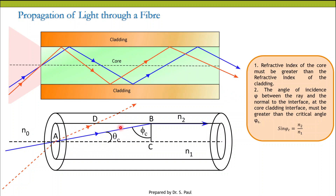Two important things to remember: First, the refractive index of the core must be greater than the refractive index of the cladding. Here φc is the critical angle — if a ray is incident at angle φc it will graze the surface between the core and cladding, and any ray incident at an angle greater than φc will be totally internally reflected. So to achieve total internal reflection, the core must have a refractive index greater than that of the cladding.